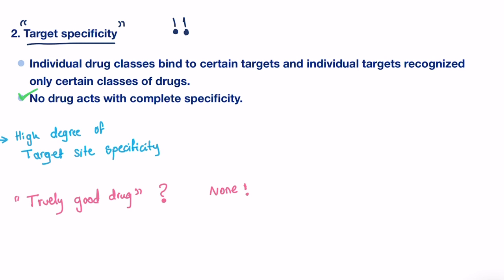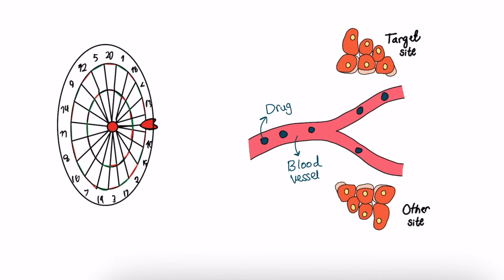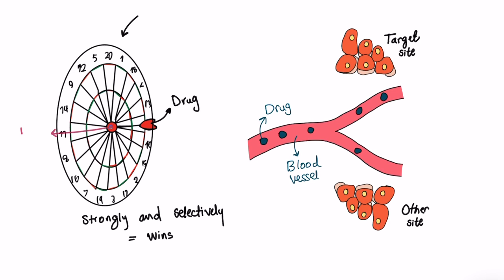Think of a dartboard. The drugs that bind strongly and selectively to their biological targets are analogous to a dart that sticks firmly to the dartboard in a high-scoring position. The further away you move from the target, the less you score.